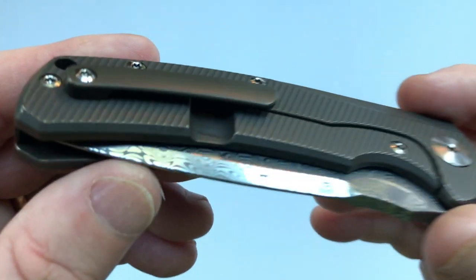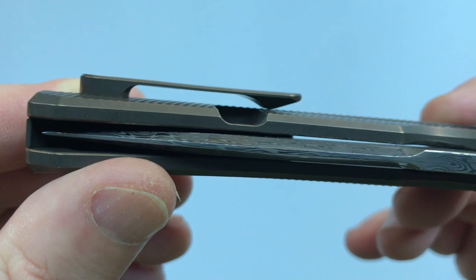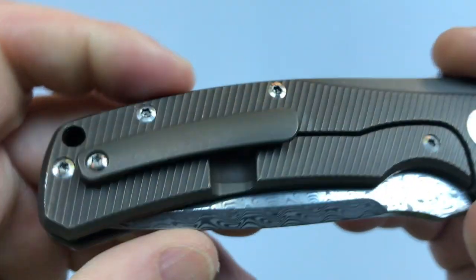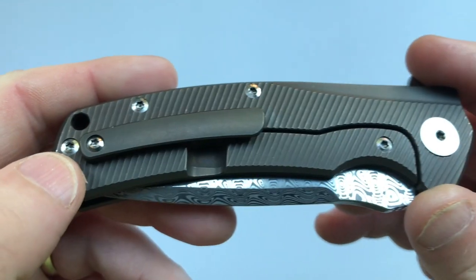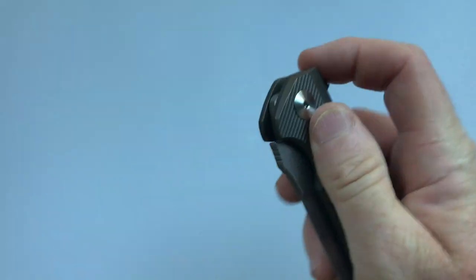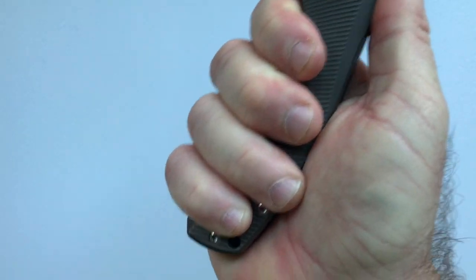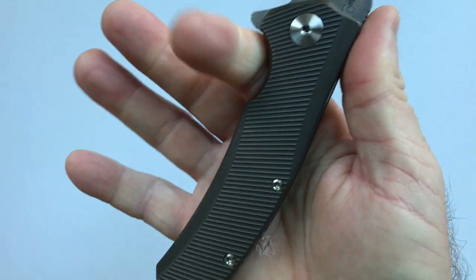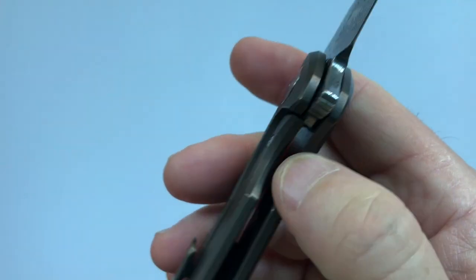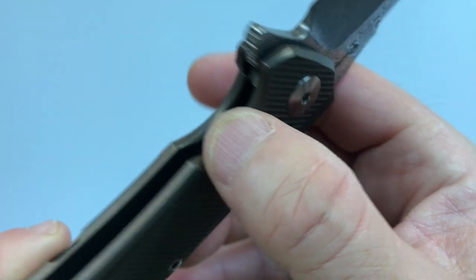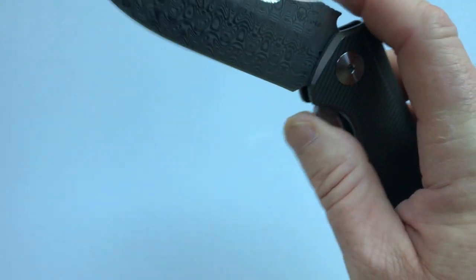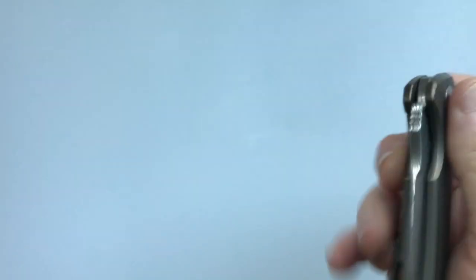The pocket clip is a 3D milled pocket clip with good retention. It has external hardware. The ergonomics of the knife are great. It's a large knife for me and it fills the hand with a little bit left over. There's a milled cutout for your finger and the show side is milled a little lower so it's easy to get in to unlock the lock bar.